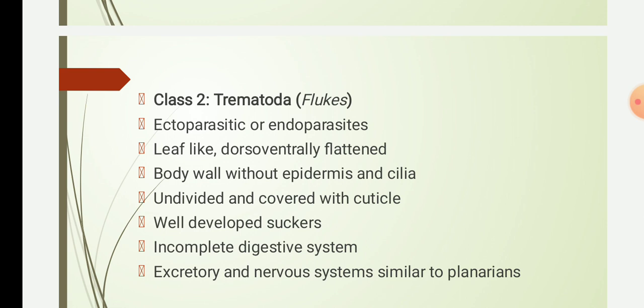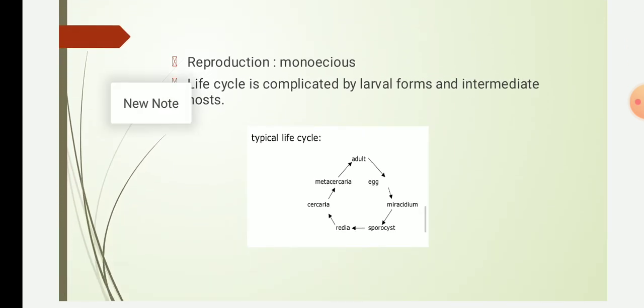The excretory system and nervous system are similar to planarians — protonephridia with flame cells are present. The nervous system has a distinct head with cephalic ganglia, ventral nerve cords connected by ladder-like interconnections, and all sense organs are restricted to the cephalic part. They also have chemoreceptors which help detect the chemical concentration of the environment.